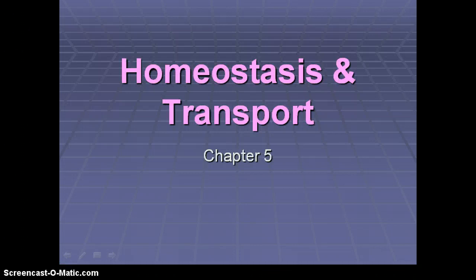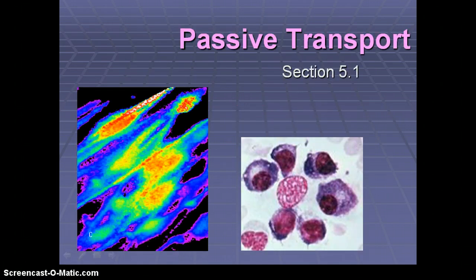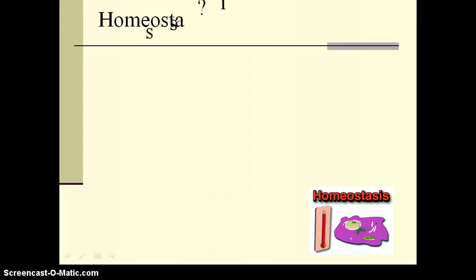To start our notes today, we'll be looking at homeostasis, and then we're going to look at just the basics of why particles are in motion and how that's important to a cell. Homeostasis means a stable internal environment. That definition came from chapter 1, and you need to make sure that you know it as we go through this entire semester.